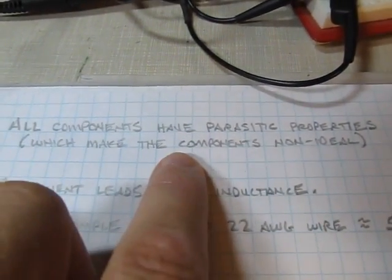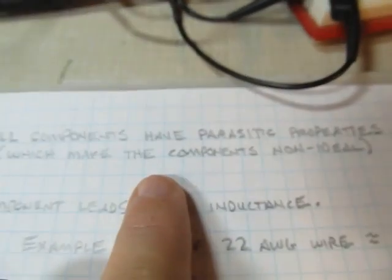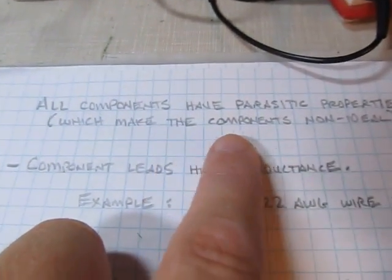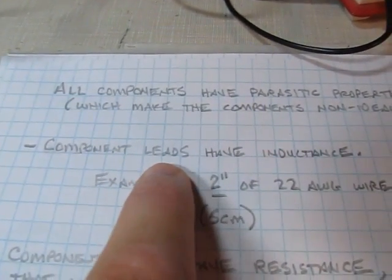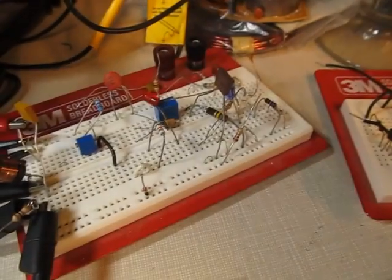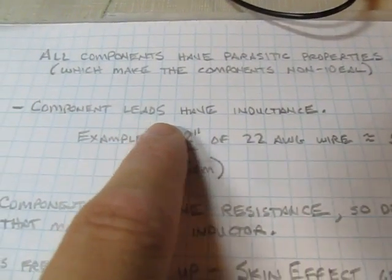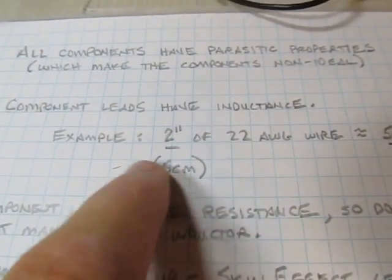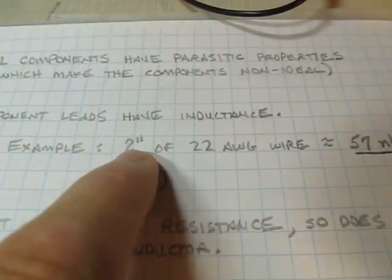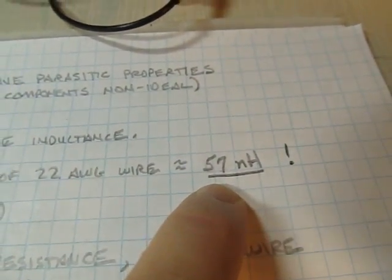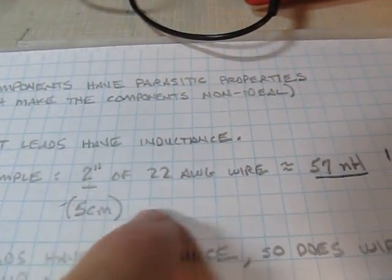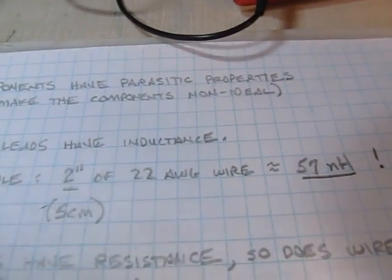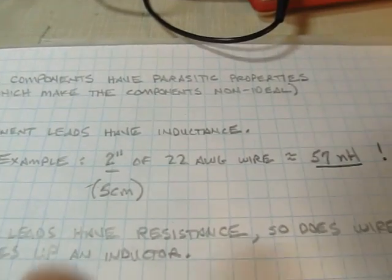So all components have got parasitic properties, parasitic values associated with them. And what we mean by that is this. Simple things like the component leads. The leads are generally wires or they're terminations on a surface mount component, but they all have some amount of inductance. Just as an example, a straight piece of wire, a two inch length of 22 gauge wire has about 57 nanohenries of inductance, just by itself without even making a turn in it. It's about five centimeters long. So we've got to add that into the properties of a particular component. At some frequencies, that might matter.